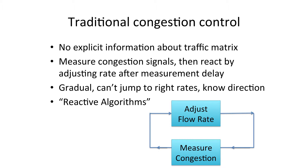On the other hand, here's what we do today. In today's congestion control schemes, neither the end hosts nor the links have any explicit information about the traffic matrix. They're more like the control systems you heard in this morning's talk. They measure congestion signals, then react by adjusting the rates after some measurement delay. This is a gradual process — they can't jump directly to the right rates, but they know the direction in which to adjust. That's why I'll call them reactive algorithms.